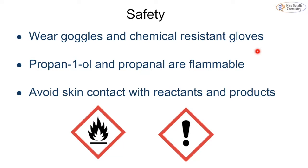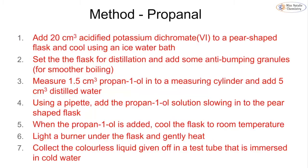For safety, wear goggles and chemical resistant gloves. Be aware that propan-1-ol and propanal are both flammable, so keep them away from any naked flame, and avoid skin contact with reactants and products. For the propanal method, we add acidified potassium dichromate to a pear-shaped flask, cool it using an ice water bath, set it up for distillation, and add anti-bumping granules for a smooth boiling motion.